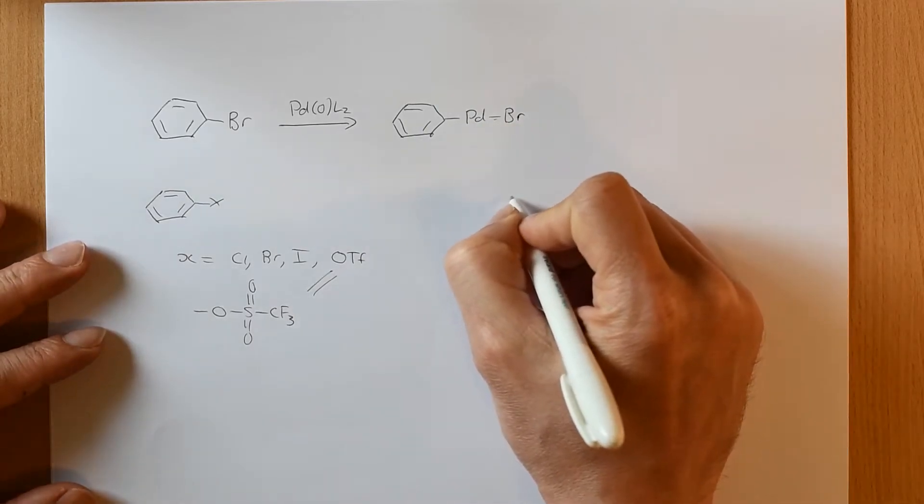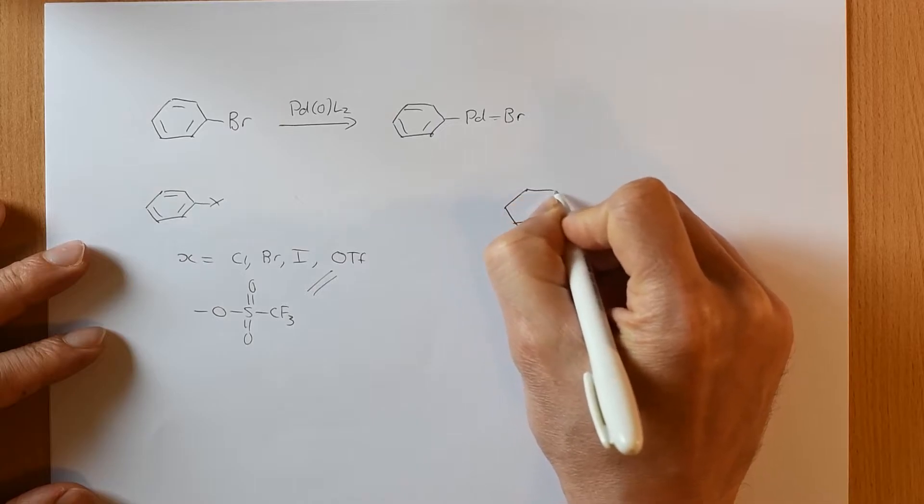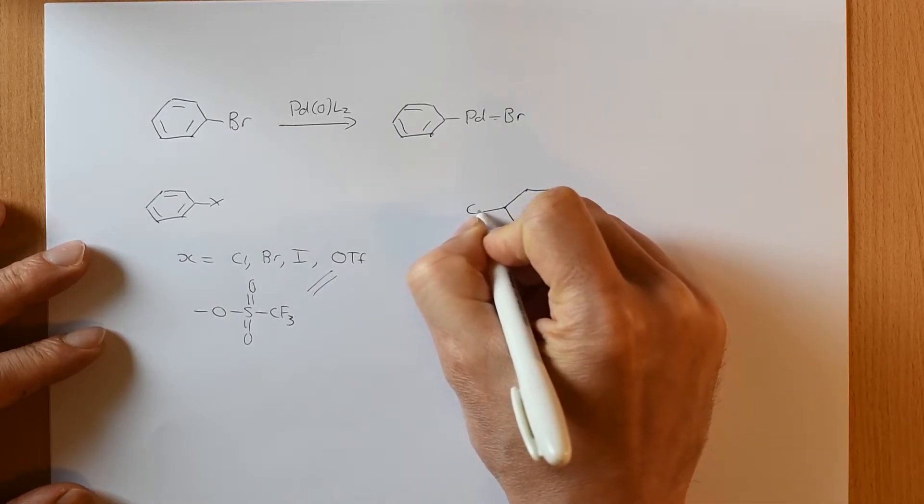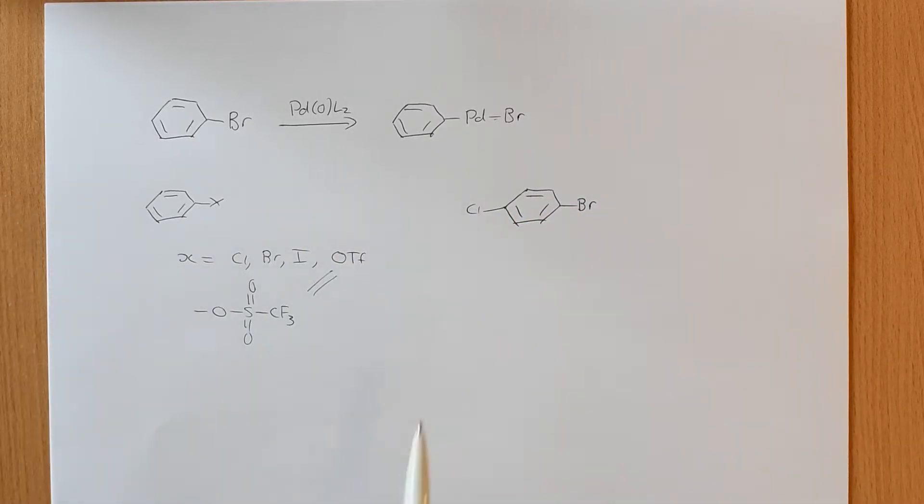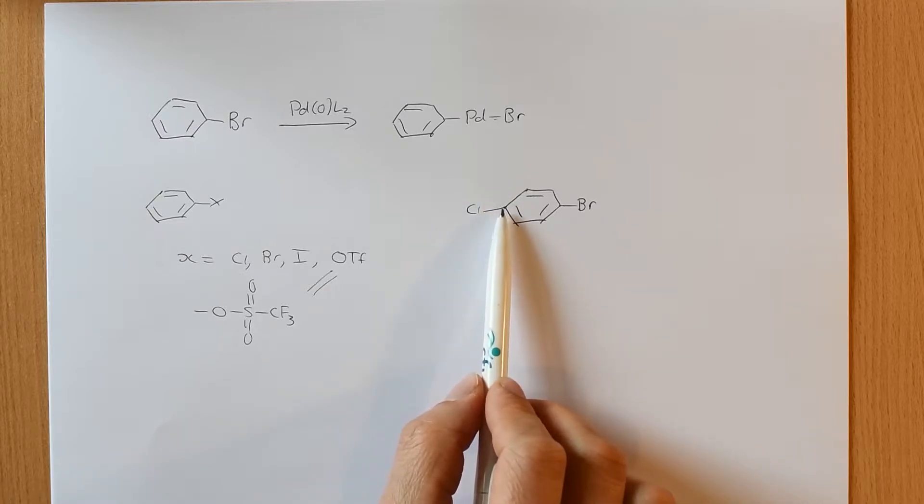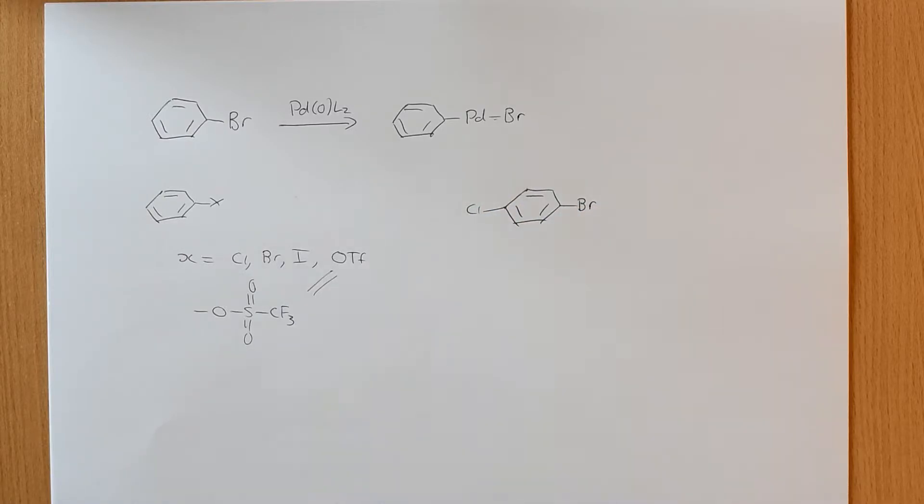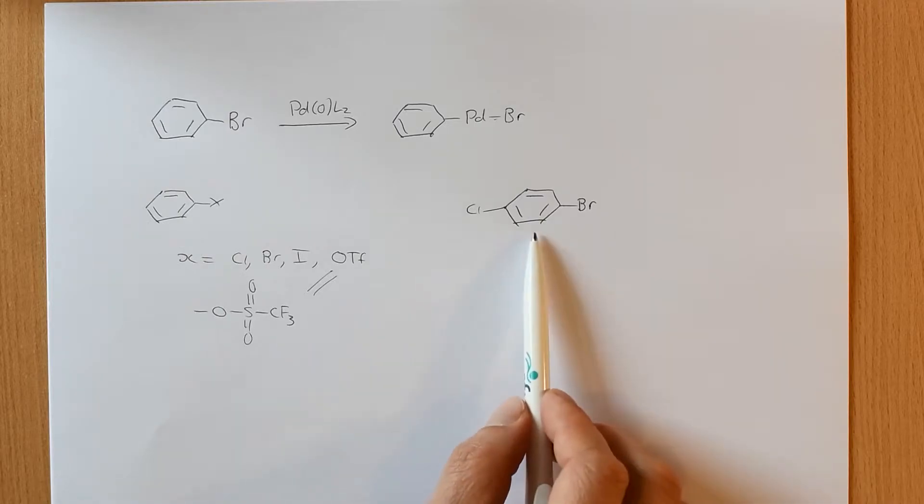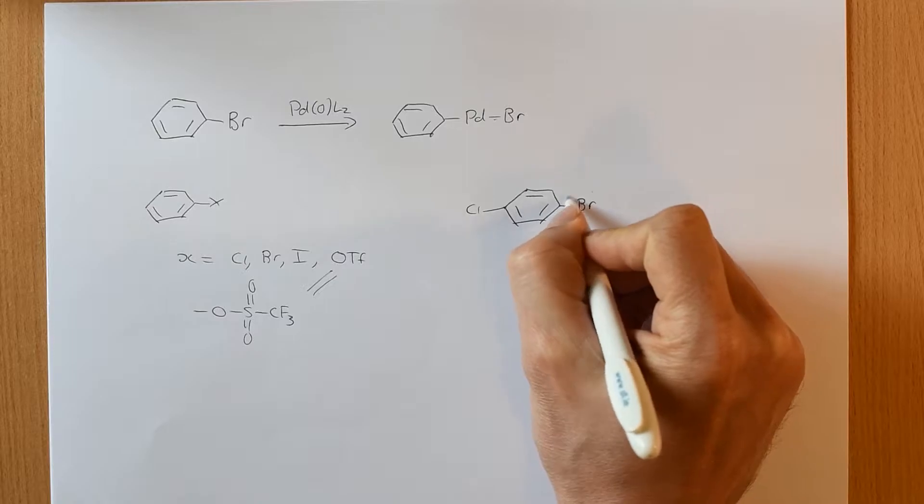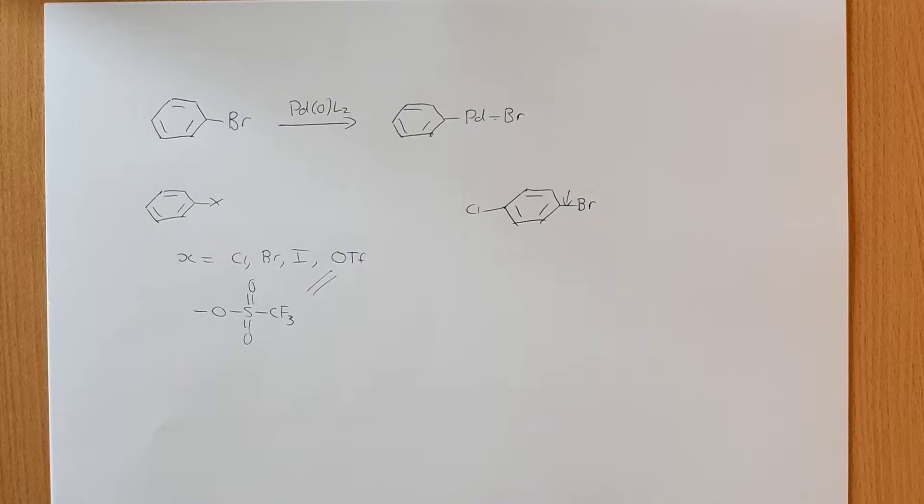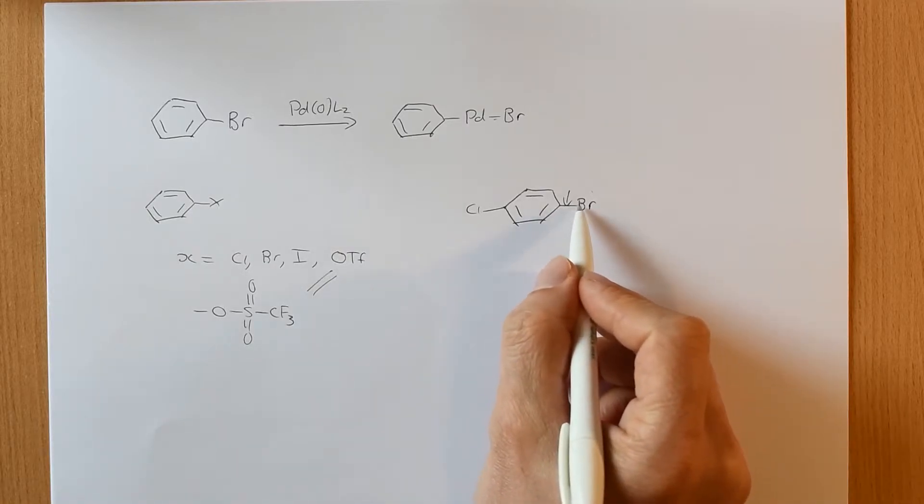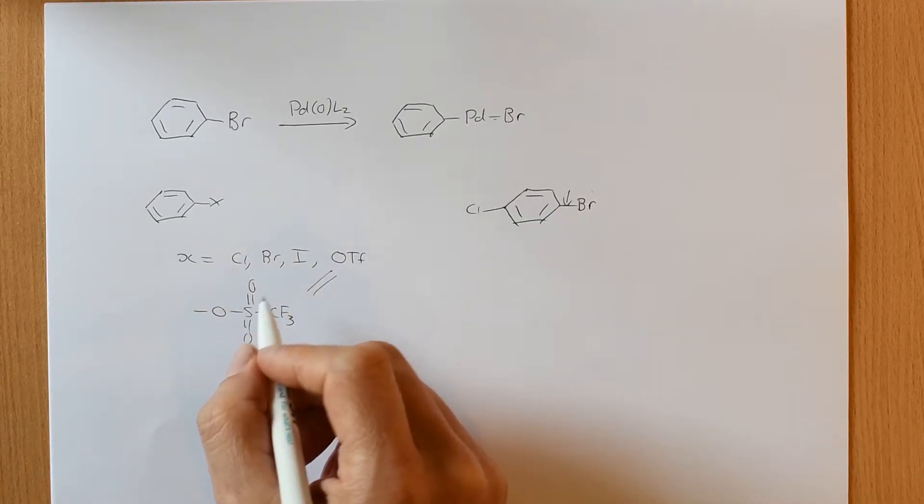So if we compare, say for example, this molecule here, and we ask ourselves which is a stronger bond? Well, the carbon-chlorine bond is stronger than the carbon-bromine bond. And you'll have seen that before, especially if you've done any mass spectrometry with halogens. So immediately bromine is going to be more easily inserted, or oxidative insertion is going to happen more easily in the carbon-bromine bond.